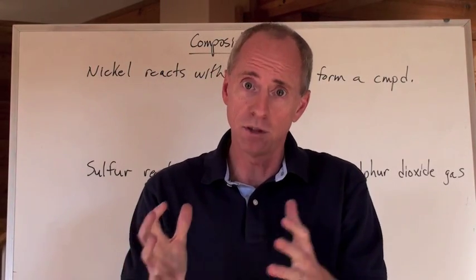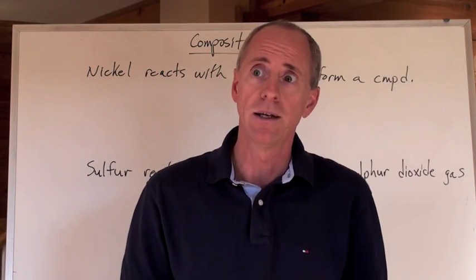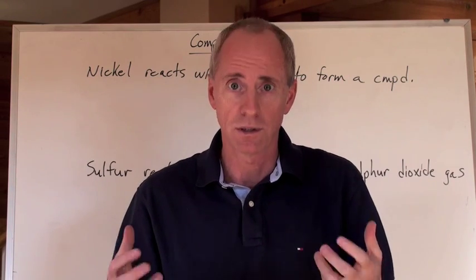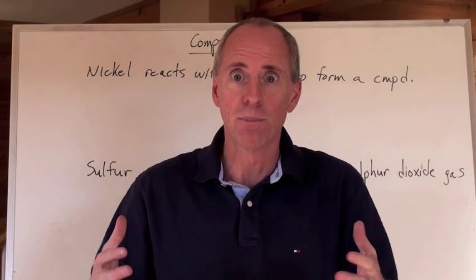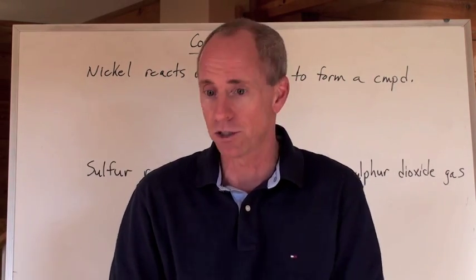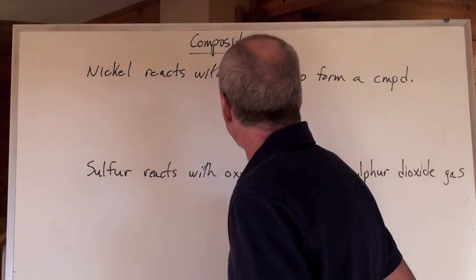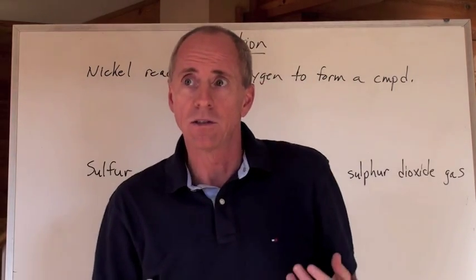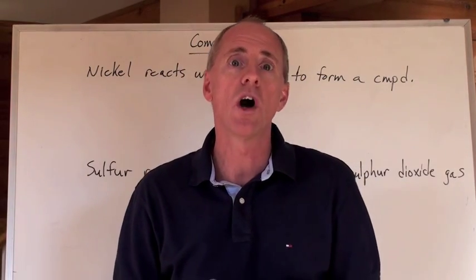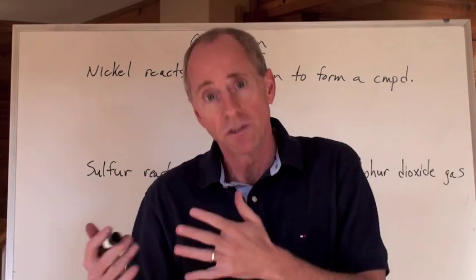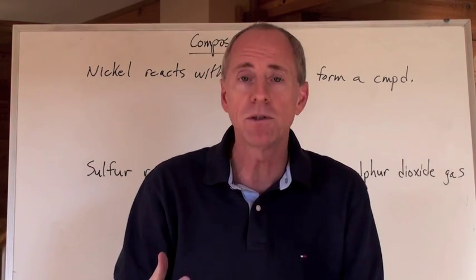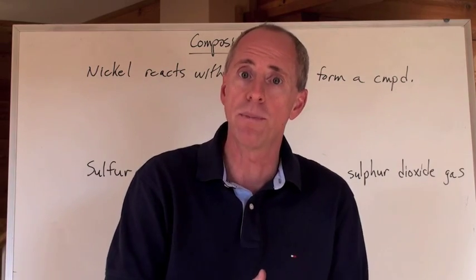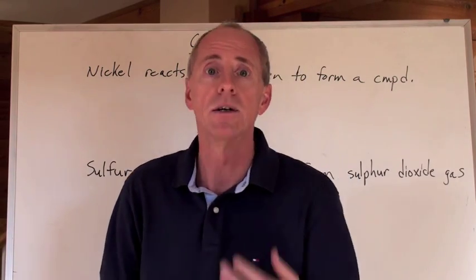We put together some elements to make compounds, molecular and ionic. Now let's take some of those chemicals, those molecules and those compounds, and put them together in chemical reactions. Here are some reactions that we will call composition reactions, or simple composition reactions. It's just essentially how elements are coming together to form compounds, whether they be ionic or molecular.